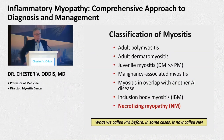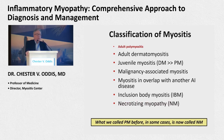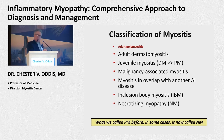Over the past five years there's been an addition to the subset classification: necrotizing myopathy. What we called PM in the past, we now in many instances call necrotizing myopathy. Adult polymyositis is shrinking — at least some of us believe that — partly because we have this new necrotizing myopathy subset in our classification.